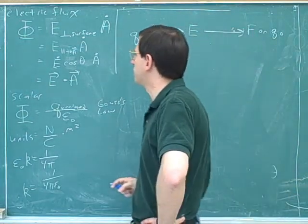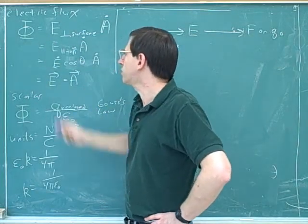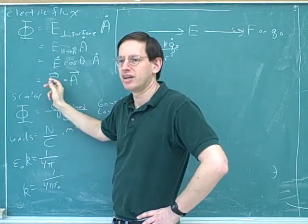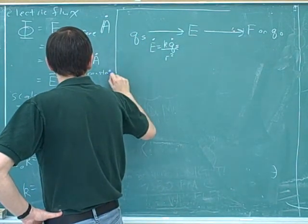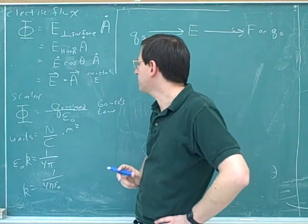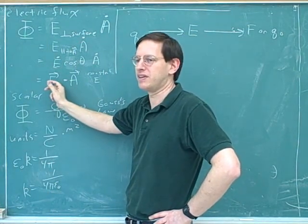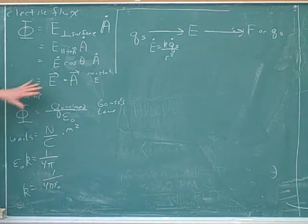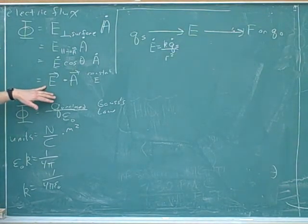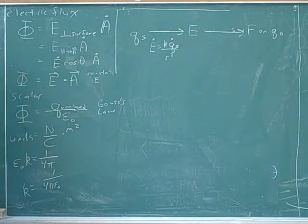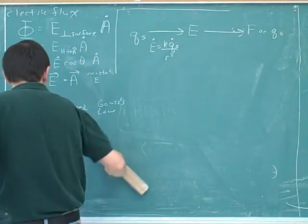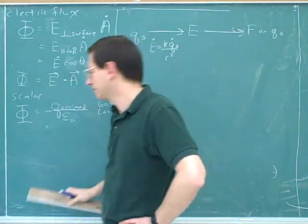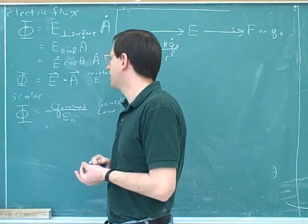Before we get into that, I have to say one more thing about electric flux. When we were looking at the formula for electric flux, we were assuming the electric field is constant. This assumes a constant electric field, because if the field isn't constant, you wouldn't know what E to plug in — only if E is the same everywhere. However, there are many cases when the electric field is not constant, so we need to generalize this formula for a non-constant electric field, and for this we're going to have to use some calculus. This is the point in the course where calculus starts to be more important.